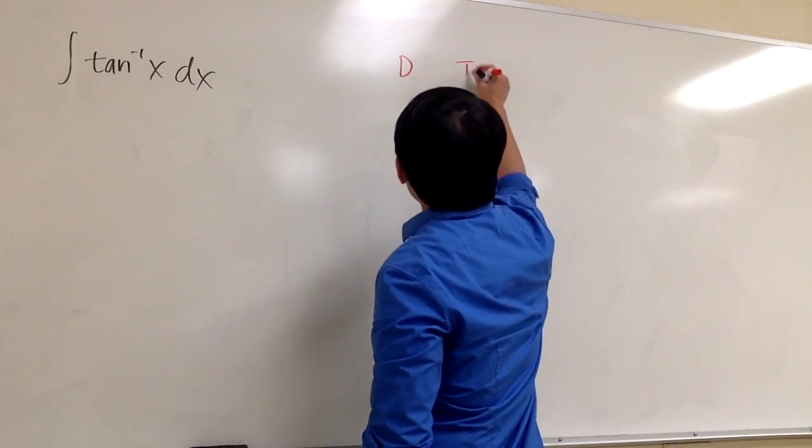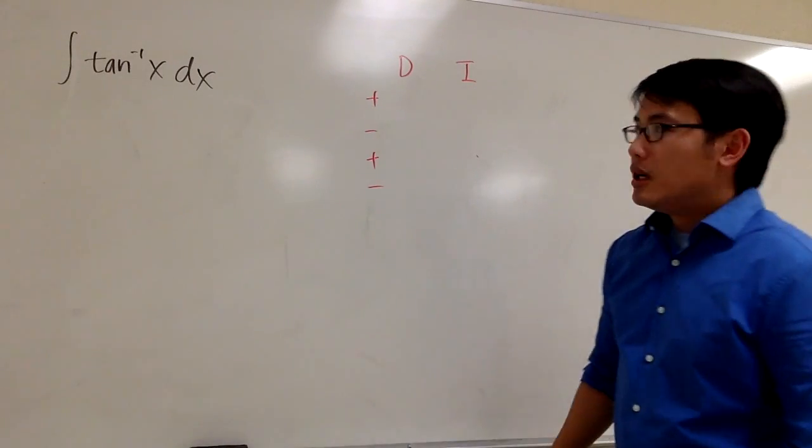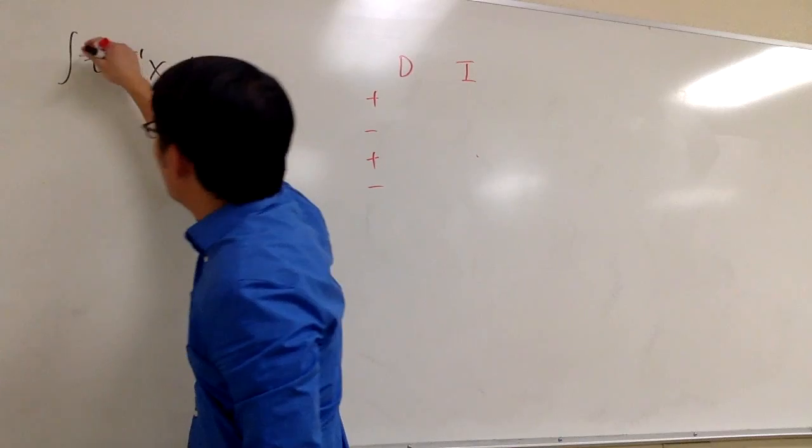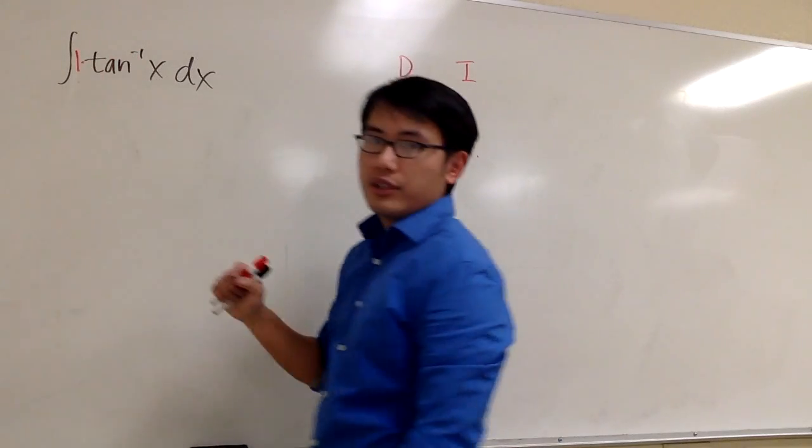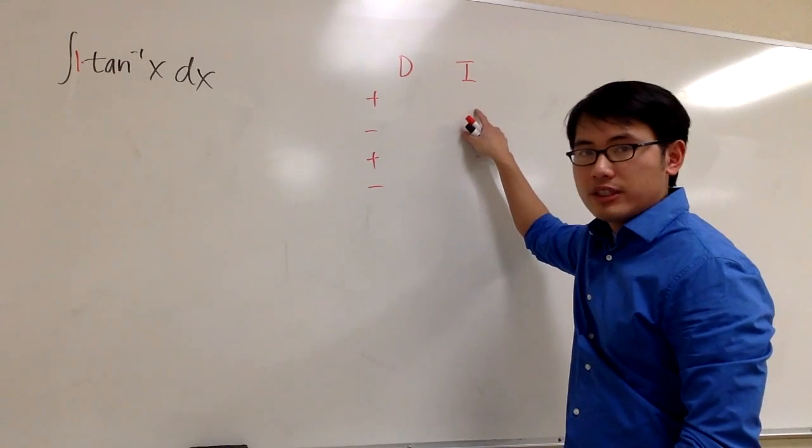Let me set out a D right here and I right here, plus, minus, plus, minus. Ok, it seems that we just have one thing right here. But then technically we can look at this as one times the inverse tangent x. And we have to choose which one goes with the D, which one goes with the I.